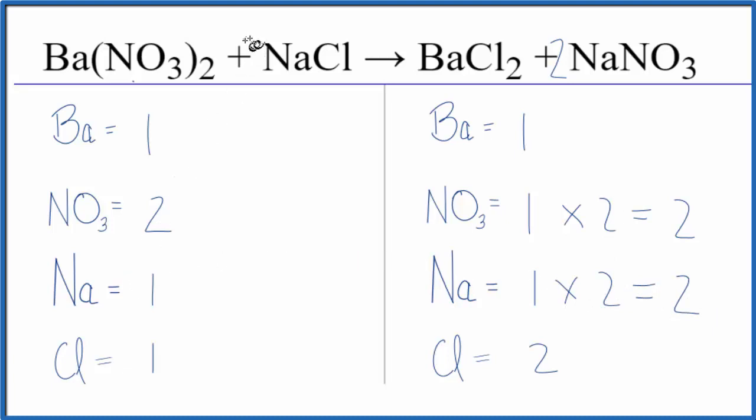sodiums. We could put a two as our coefficient here in front of the NaCl, one times two, that'd give us two. So now the sodium atoms are balanced, and the two applies to everything, so one chlorine times two,